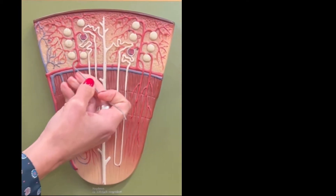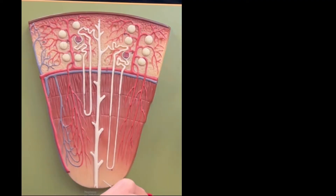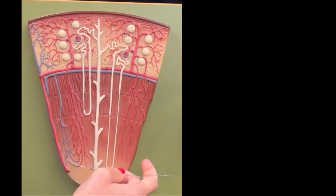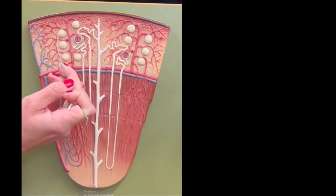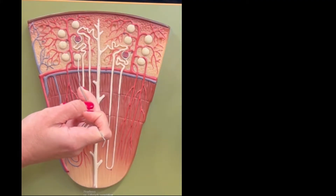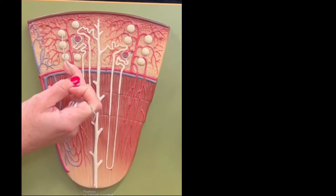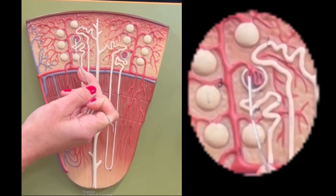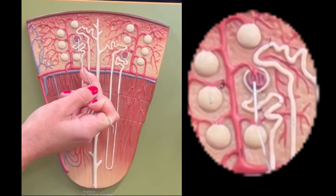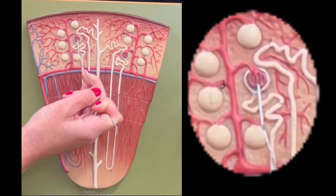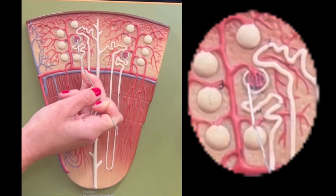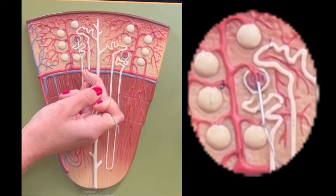This part right here is the renal cortex, and this is the renal medulla. Specifically, this would be a renal pyramid, and right here you would find the renal papilla. So these are the little balls I just showed you in the other model, and these are the renal corpuscle. Within the renal corpuscle, we find the glomerular capillaries — all this red that you're seeing here is making a reference to the capillaries we find within the renal corpuscle, and these capillaries are named glomerular capillaries.